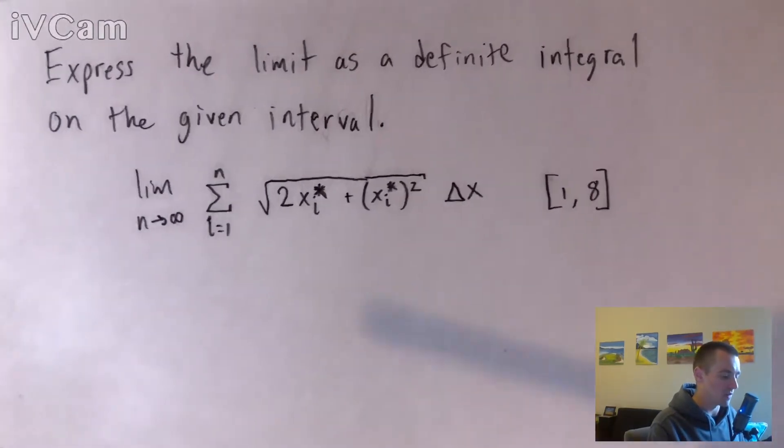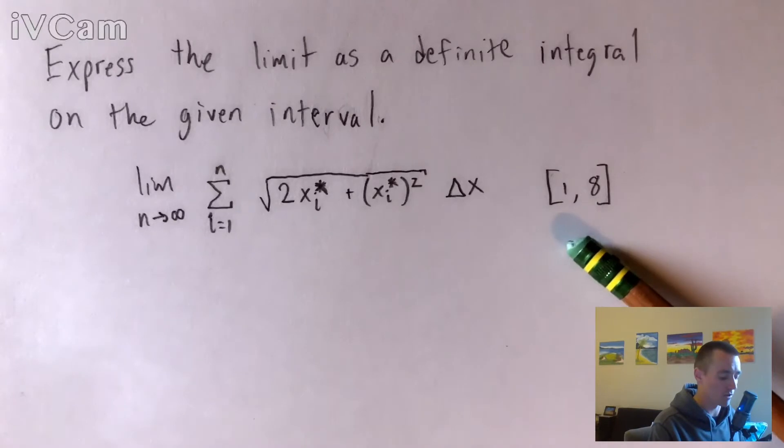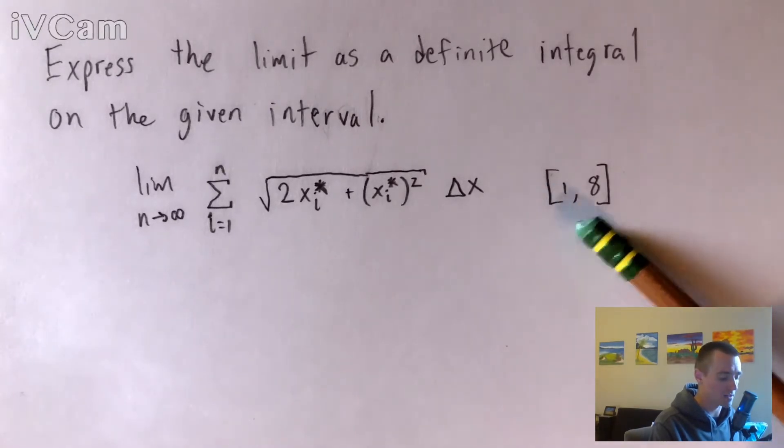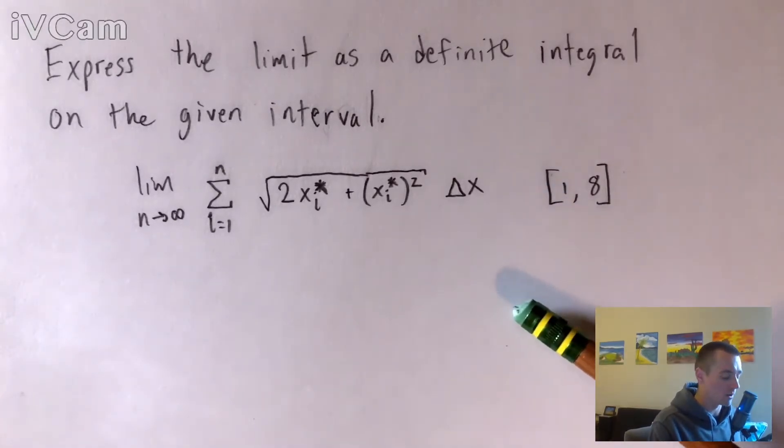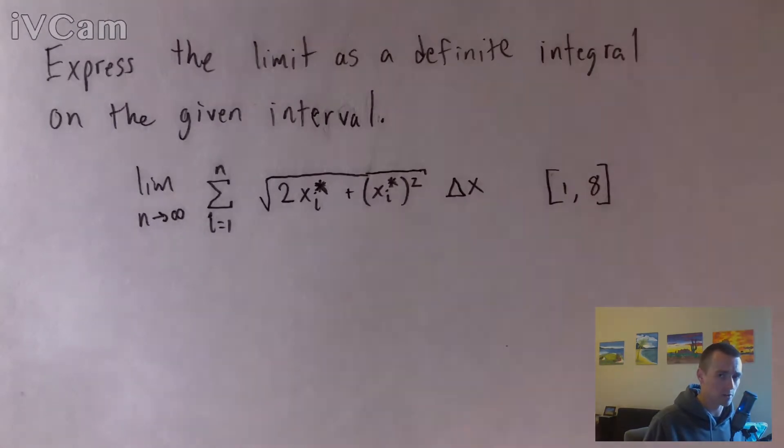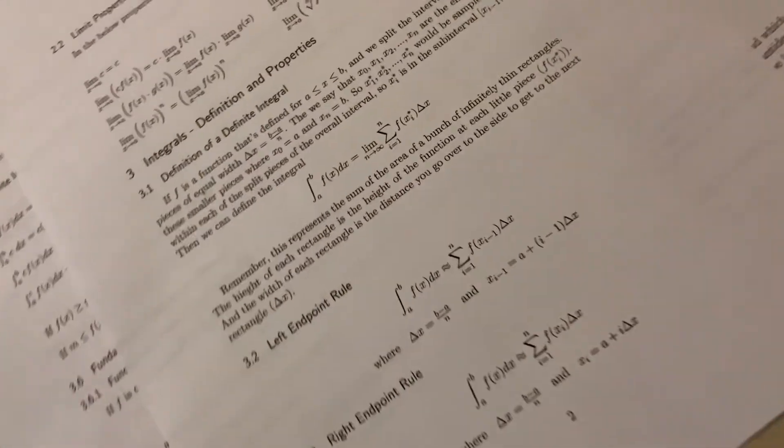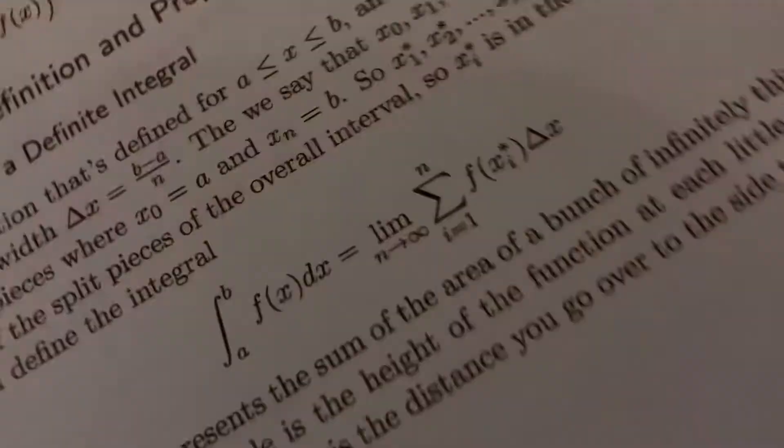And it's going to be a definite integral because we were given this interval right here from x equals 1 to 8. So in order to do this, what we're going to want to do is use the limit definition, which I do have on my Calculus 2 study guide. And there's a link to check that out in the description if you want to go grab that. But let's go ahead and just start with that formula.